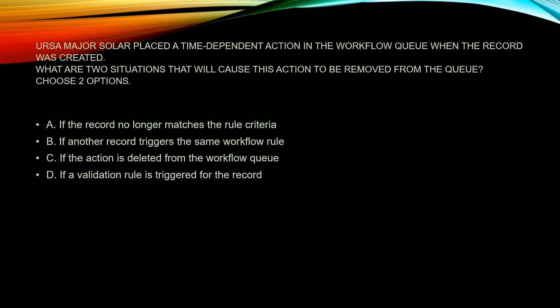Here we go with question number one. Ursa Major Solar placed a time-dependent action in the workflow queue when the record was created. What are two situations that will cause the action to be removed from the queue? A: If the record no longer matches the rule criteria.